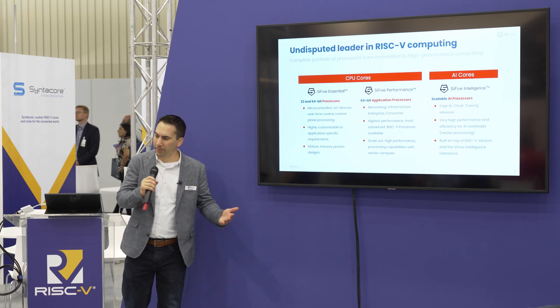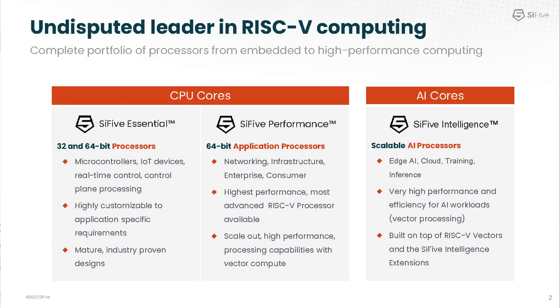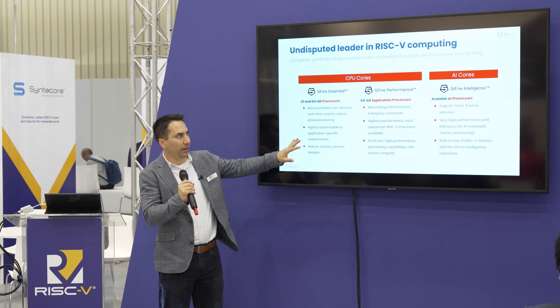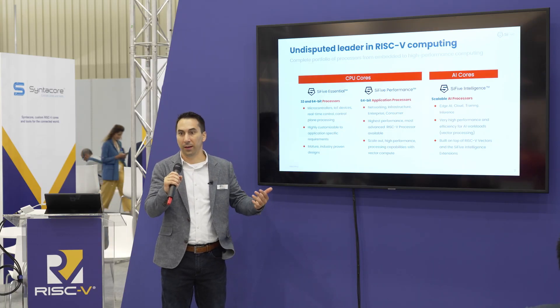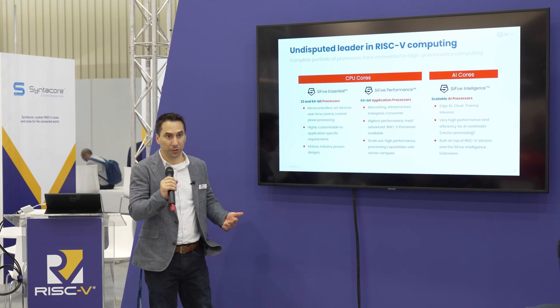The SiFive Intelligence family targets AI and ML-type applications. It leverages all the strengths of RISC-V and the RISC-V ecosystem, building on that by taking advantage of the RISC-V vector extension. The SiFive Intelligence family has a range of different implementation points on the vector processor side, really targeted at very high-performance yet efficient AI workloads. In addition to RISC-V vector support, we also introduced SiFive Intelligence extensions, adding support for custom data types such as INT8 and BFloat16, which are pretty common in these types of workloads.